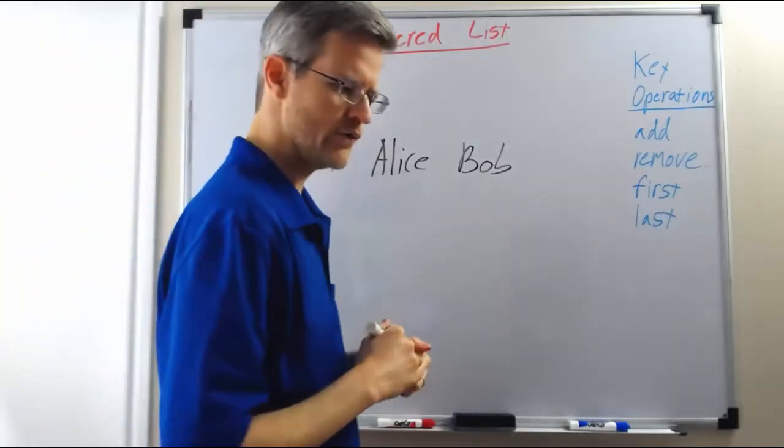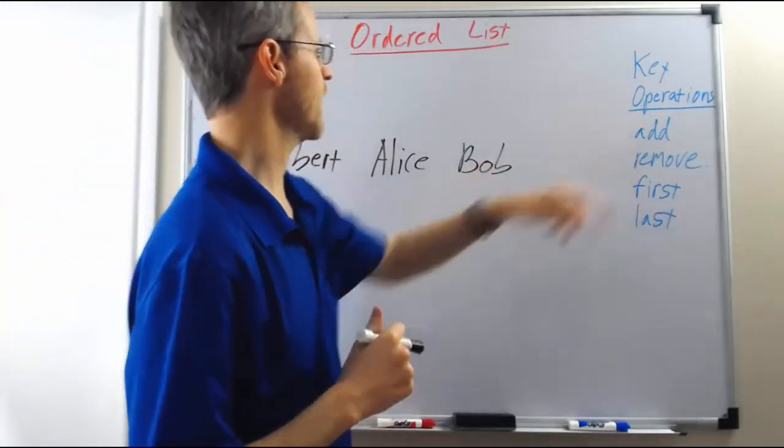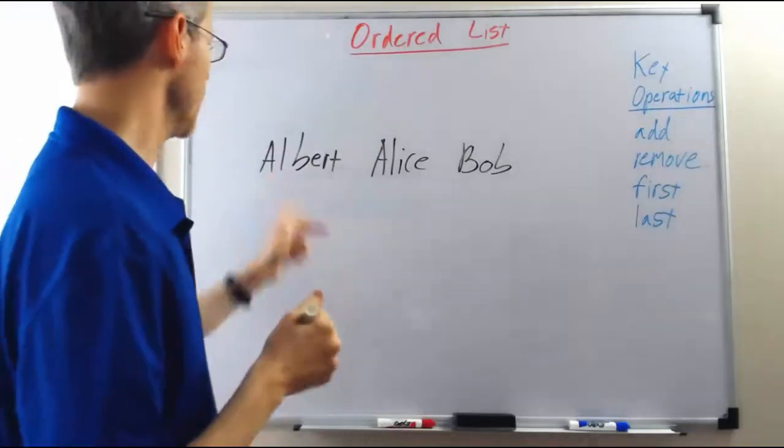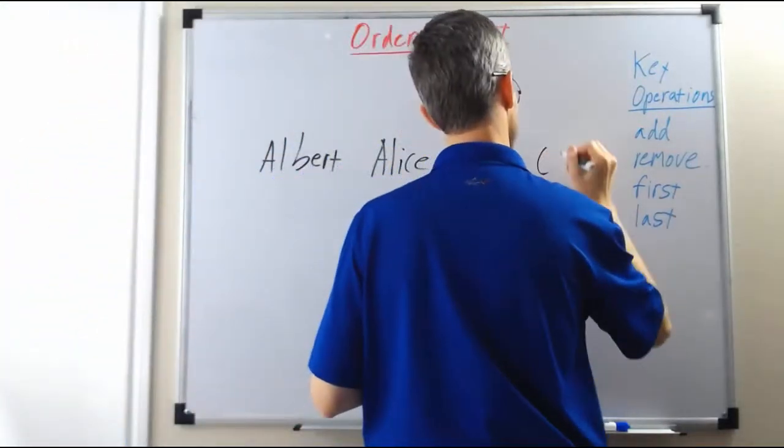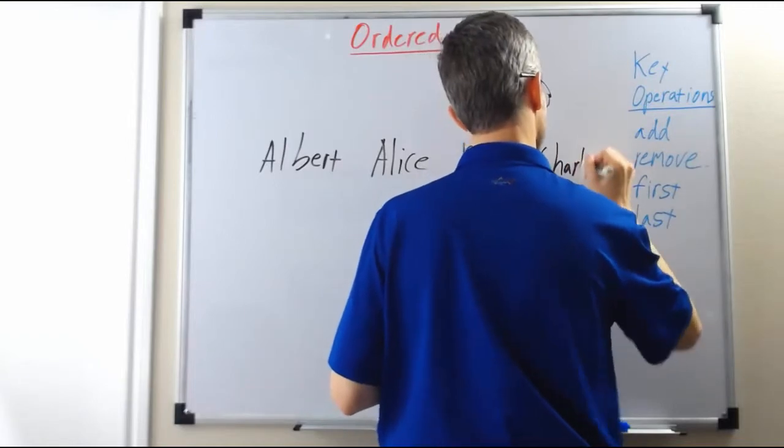And then let's suppose that we call add with the name Charlie. Charlie should go at the very end here after Bob, so this is where Charlie will get added.